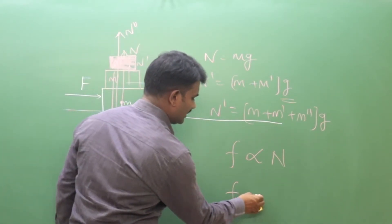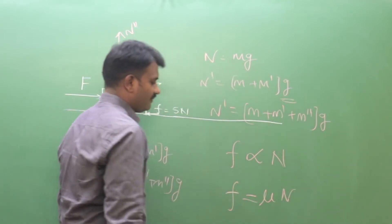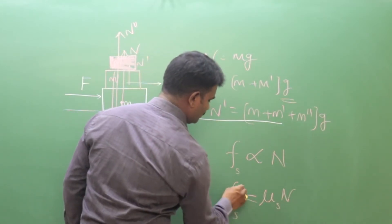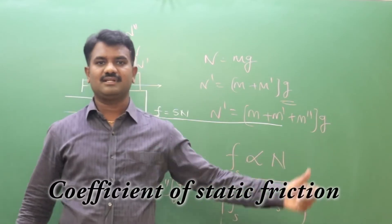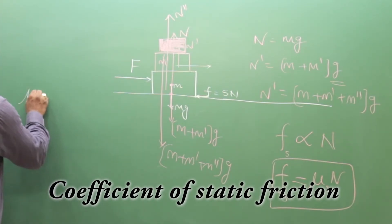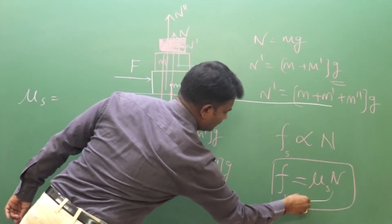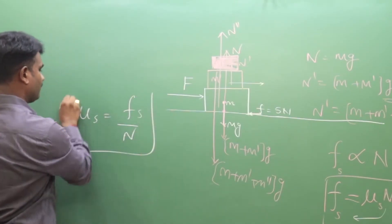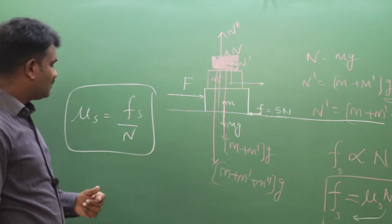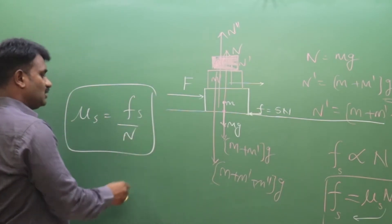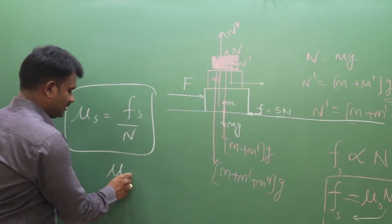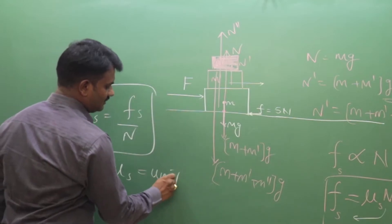To remove the proportionality we introduce a constant, so the equation becomes fs equals mu-s times N, where fs is static friction and mu-s is called the coefficient of static friction. We can rearrange this to get mu-s equals fs divided by N — it is the ratio of static friction to the normal reaction. Since both friction and normal reaction are in newtons, they cancel out, making mu-s a dimensionless, unitless quantity.